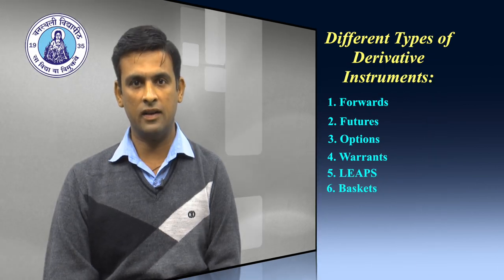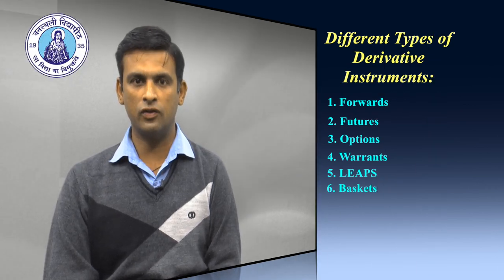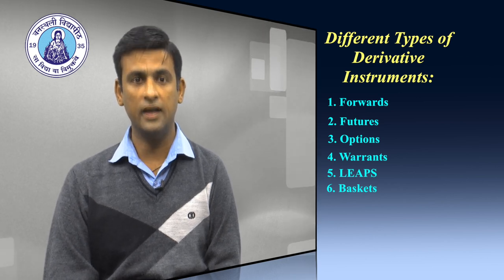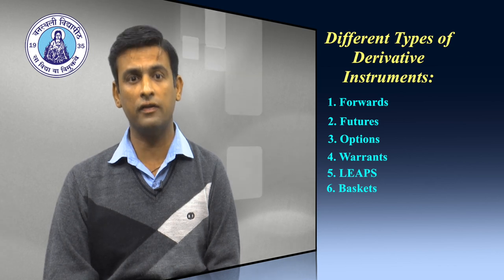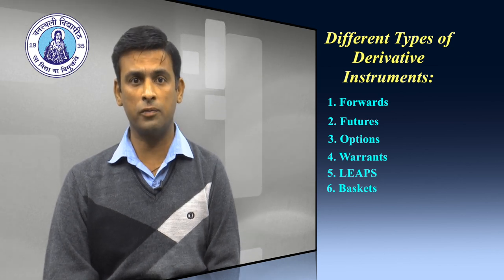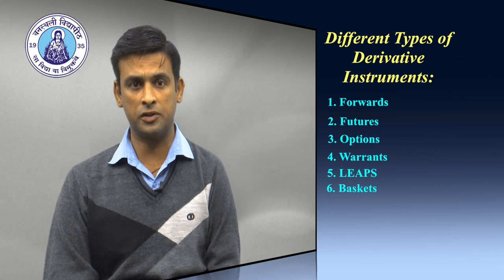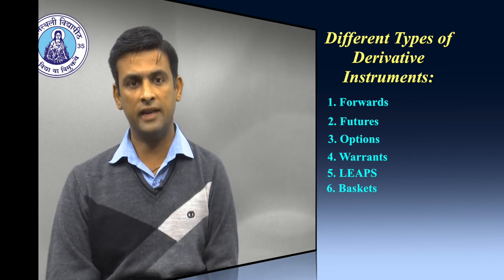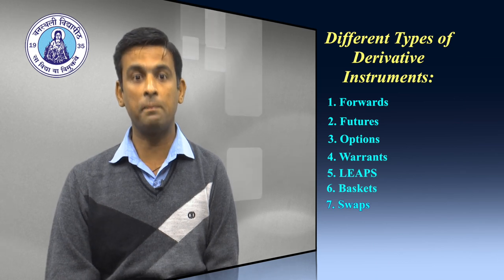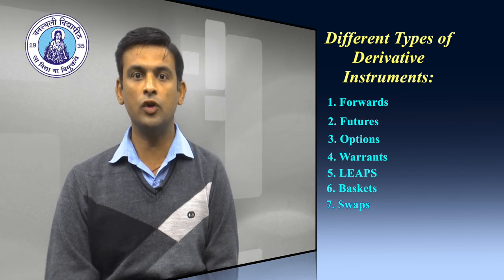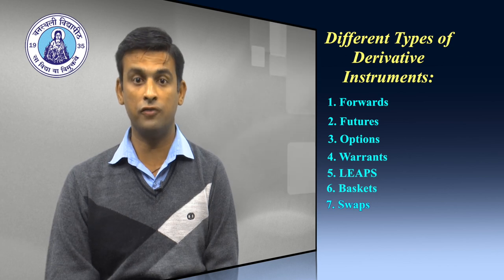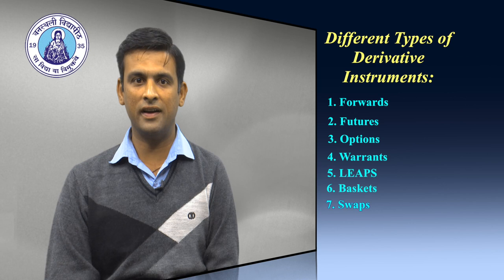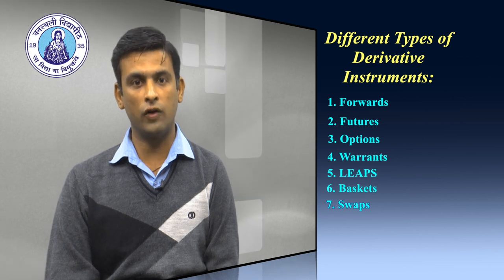Next is the basket. Basket options are options on portfolios of underlying assets. The underlying asset is usually a moving average of a basket of assets. Equity index options are a form of basket options. Next, the most important derivative is swaps. Swaps are private agreements between two parties to exchange cash flows in the future according to a prearranged formula. They can be regarded as a portfolio of forward contracts.